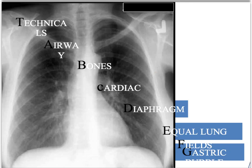The letters stand for: T — technicals, A — airway, B — bones, C — cardiac, D — diaphragm, E — equal lung fields, and G — the gastric area.